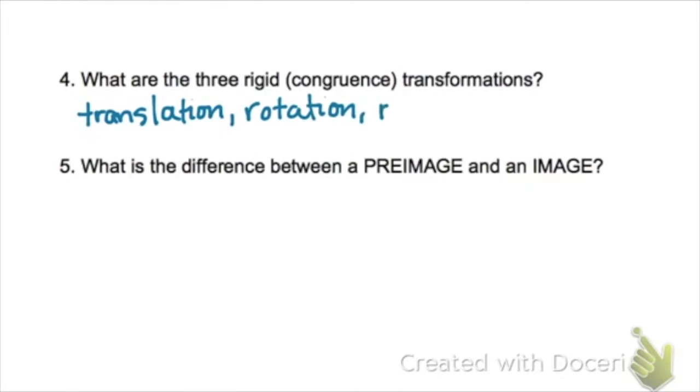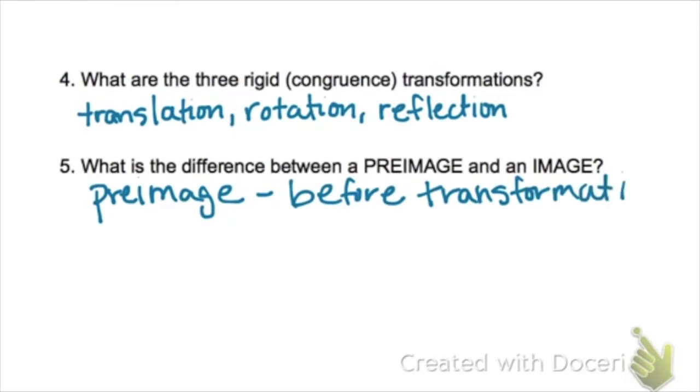Your three types of transformation are translation, rotation, and reflection. What's the difference between a pre-image and an image? The pre-image is the image before it's transformed, and the image is the new image after the transformation.